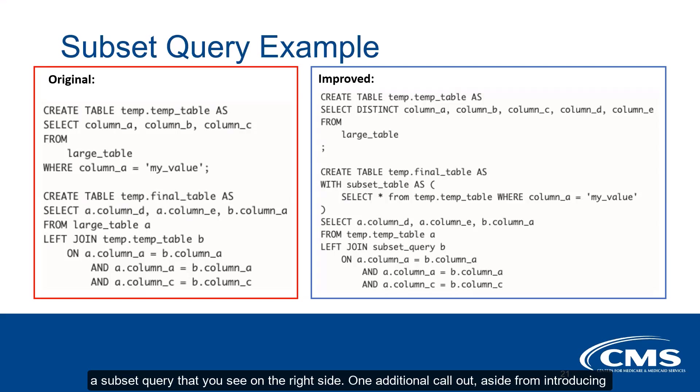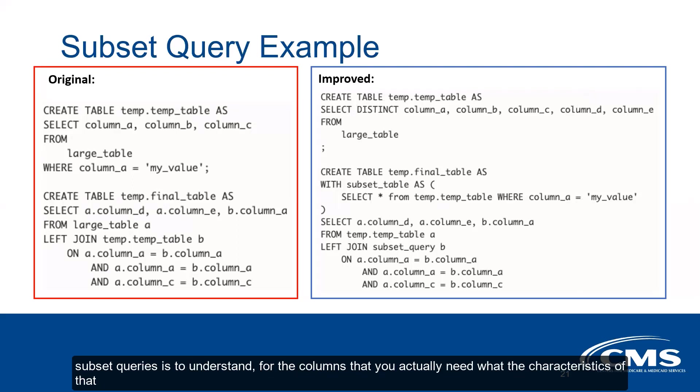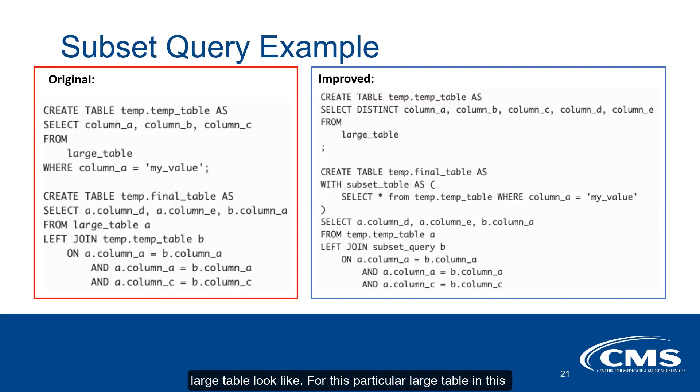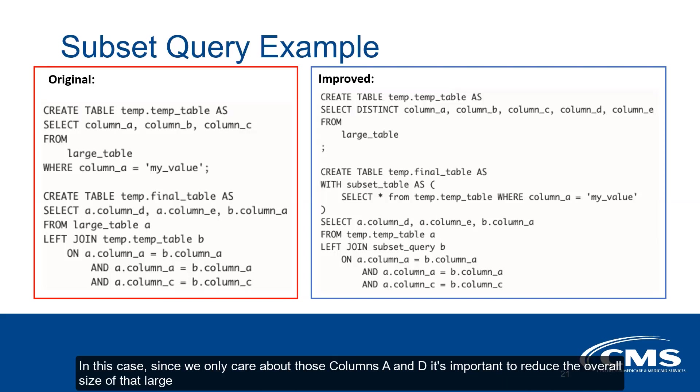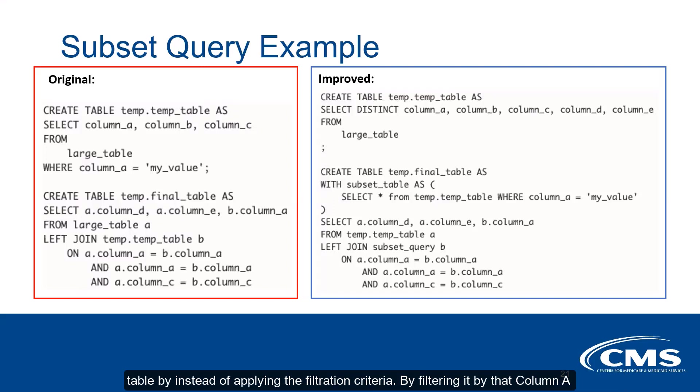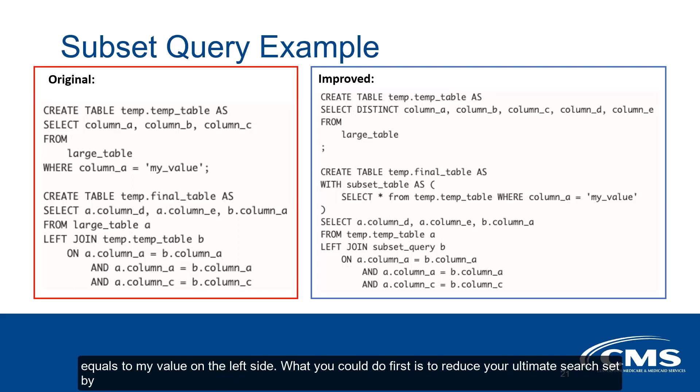One additional callout aside from introducing subset queries is to understand for the columns that you actually need, what the characteristics of that large table look like. For this particular large table, even though you need columns A, B, C, and D only, there are going to be multiple records and instances of those fields existing where other fields might be different. Since we only care about those columns, it's important to reduce the overall size of that large table. Instead of applying the filtration criteria by filtering by column A to 'my value' on the left side, what you could do first is reduce your ultimate search set.